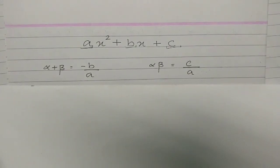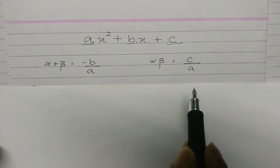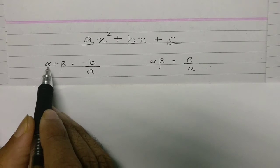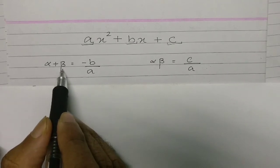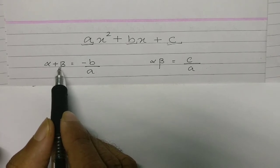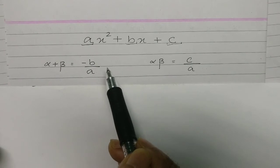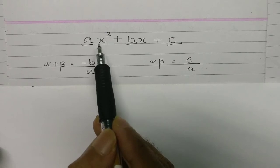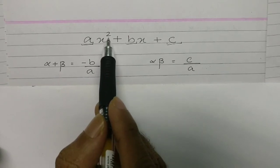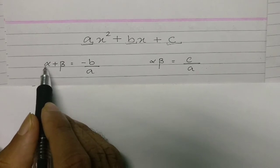Once we know what the zeros of the polynomial are, let's understand the relationship. Those of you seeing this for the first time may be scared by these symbols — don't worry. This symbol is called alpha; it's a Greek symbol. This one is called beta. Alpha and beta are nothing but the zeros of the polynomial. You put some number in the polynomial, and after solving you get zero — those numbers are the zeros. I'm saying only two because the degree is two, so there are two zeros: alpha and beta.